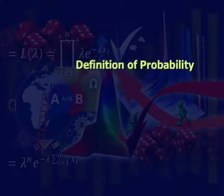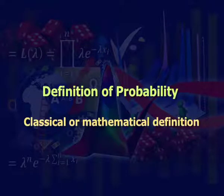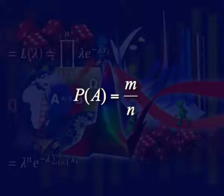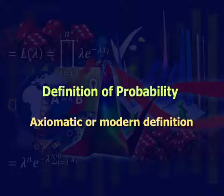Let us move to the definition of probability. Classical or mathematical definition: if an experiment can result in N mutually exclusive and equally likely ways, and if M of them are favorable to the happening of an event A, then the probability of happening of event A is defined as the ratio M to N. That is, probability of A equals M upon N.